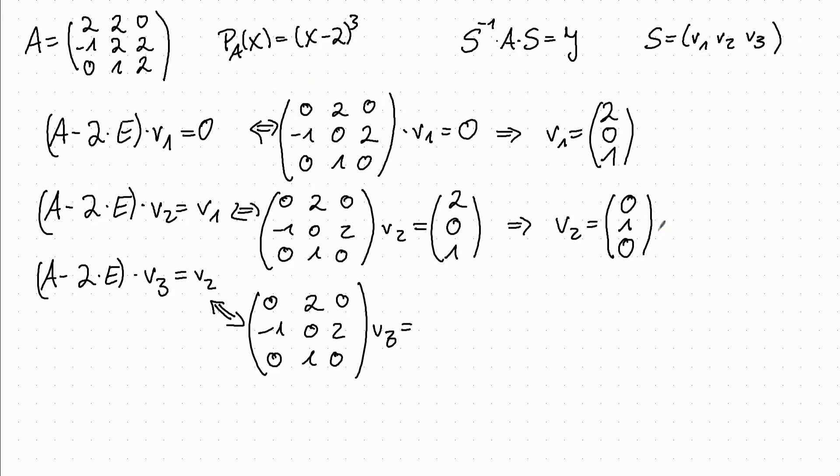And V2 is this one: [0, 1, 0]. And now we see from the first row and the third row that the second entry of V3 has to be 0.